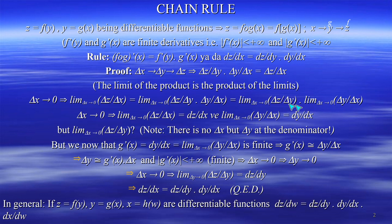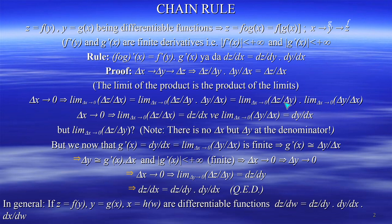We need to show that when delta X goes to zero, delta Y also goes to zero. We can do this by using the finiteness of the derivatives — especially of G prime of X, which is crucial for this proof.